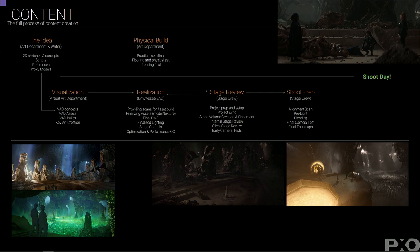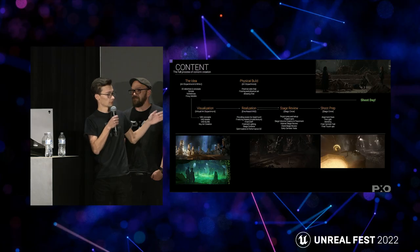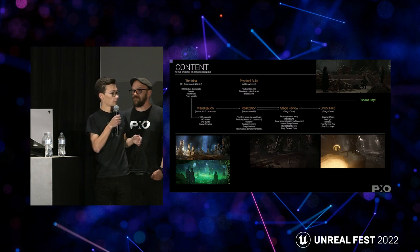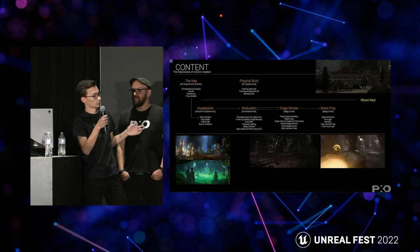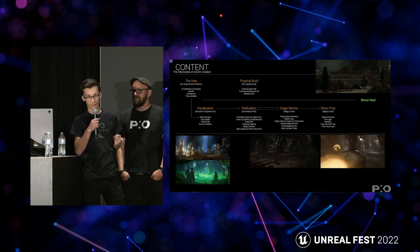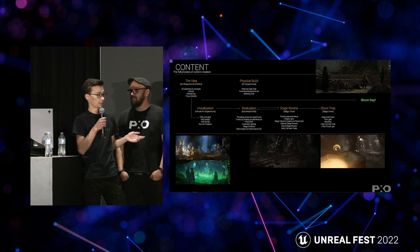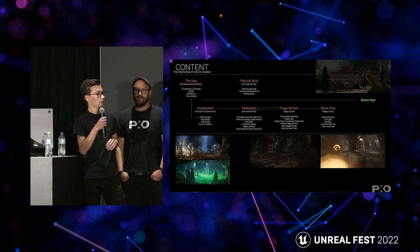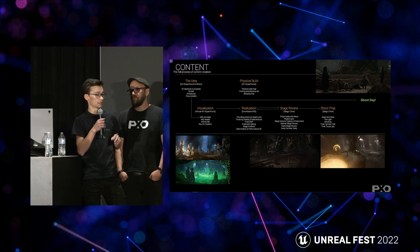From a scanning point of view, we are here multiple times. The first time we come is during the realization process — that's when we scan the props to be built for our asset team. The second time is during shoot prep, when we scan for an alignment scan, which happens on a blend day if the environment needs it. And the last time we scan is on the shoot day — or the day after depending on production needs — which is a full coverage scan of the set.